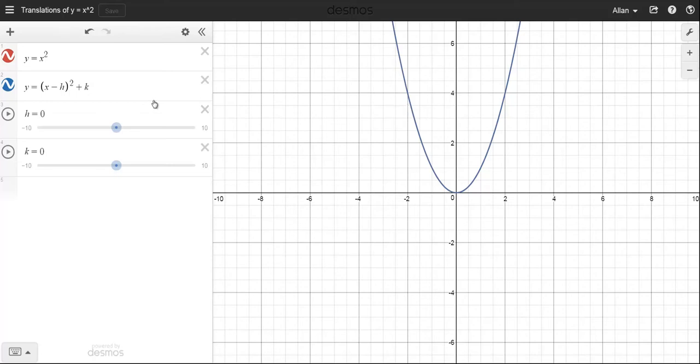The purpose of this tutorial is to show how translations work with a parabola. So I've graphed y equals x squared, and actually I've got two different graphs here in my Desmos graph.